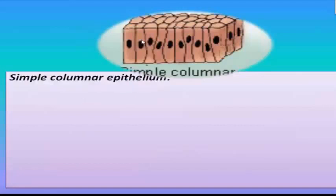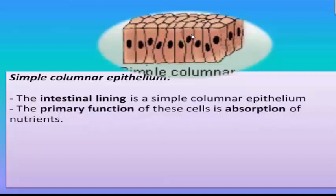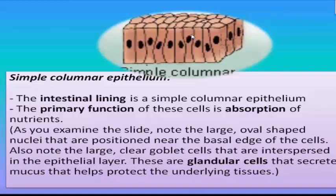The third is simple columnar epithelium — one layer, columnar-shaped. An example is the intestinal lining, and the primary function of these cells is absorption of nutrients. Note the large oval-shaped nuclei positioned near the basal edge of the cells. Also note the large clear goblet cells interspersed in the epithelial layer — these are glandular cells that secrete mucus to help protect the underlying tissues.